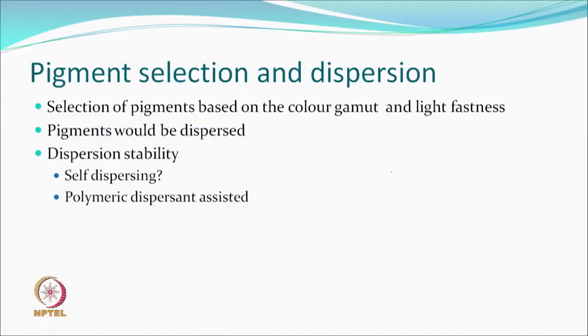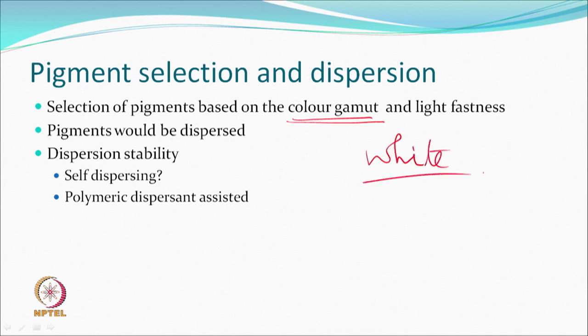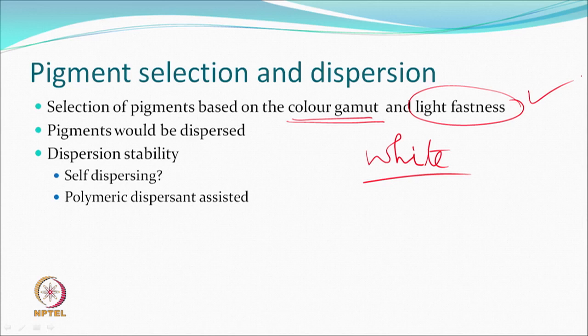For pigment dispersion, the choice of pigment depends on the color gamut — normally four CMYK colors are used, with white possible as an additional option. High light fastness is expected. Pigments are dispersed since they are not soluble in water, and dispersion stability determines shelf life. If particle size is very small, pigments can be self-dispersing; otherwise a polymer-based dispersant is used.